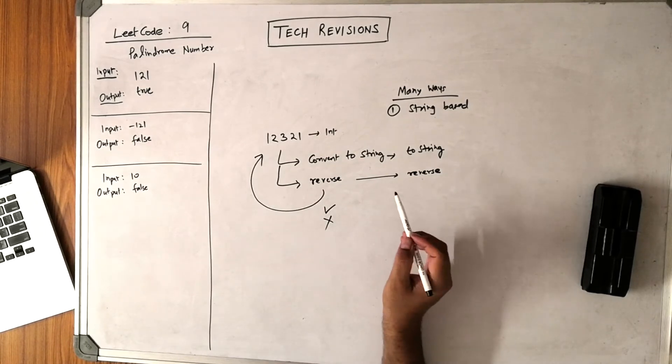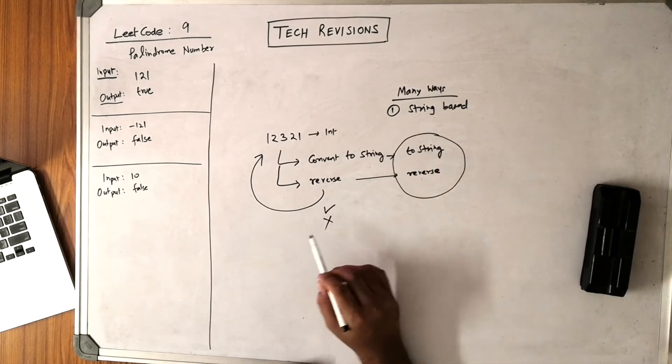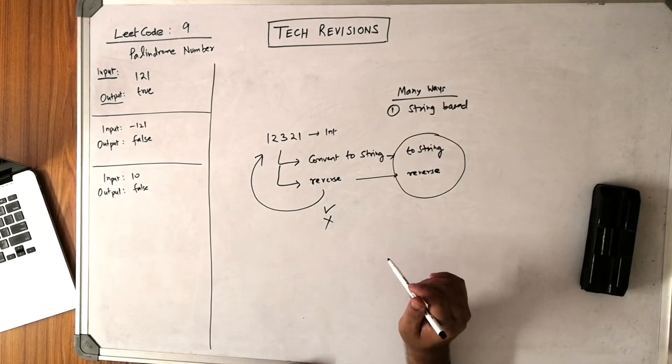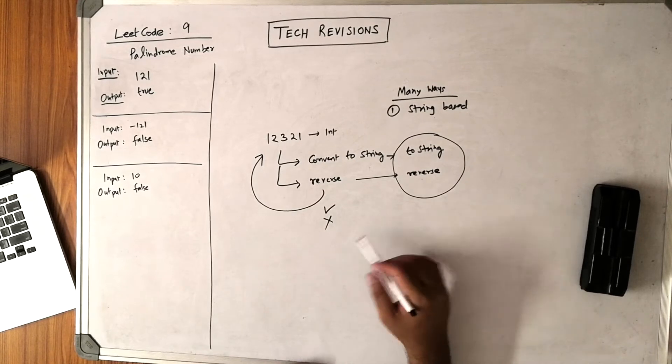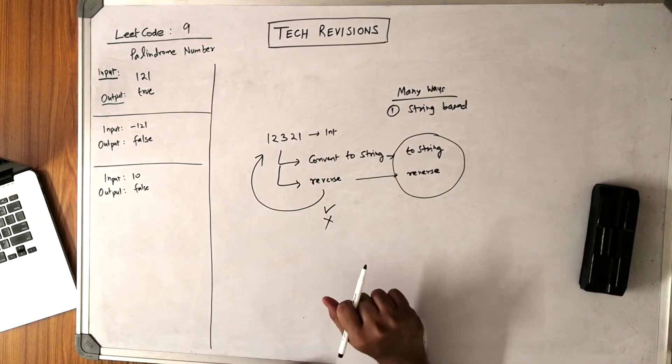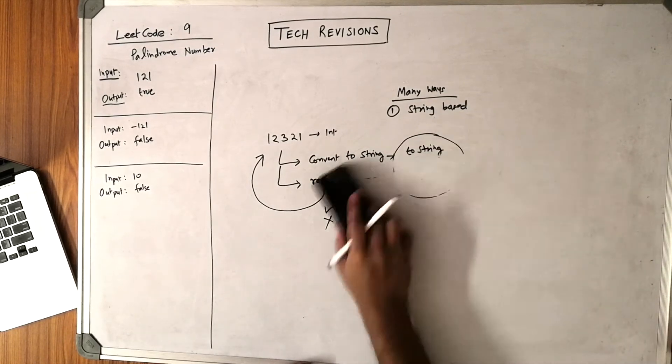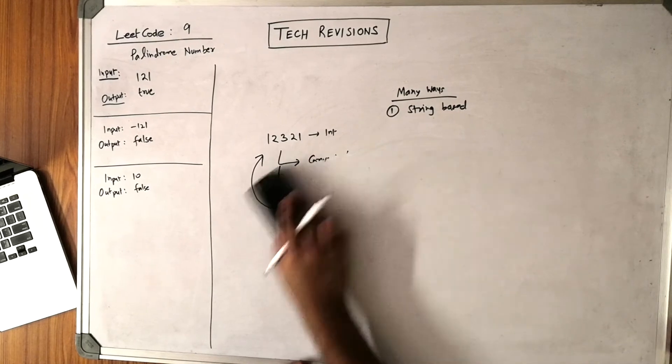Now suppose you give this approach to the interviewer. The interviewer might say that to solve this problem, you are not allowed to use the inbuilt string library functions, or even converting to string is not allowed. This is a possibility which the interviewer might put in front of you.